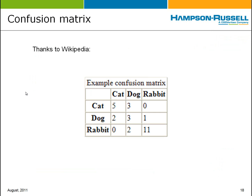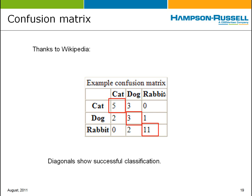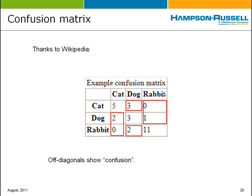One handy way of determining how well all this works is to create what's called a confusion matrix, commonly used for classification problems. As an example from Wikipedia: a computer with a neural network was trained to recognize a cat, a dog, and a rabbit from a picture. The matrix shows how well it did — the right answer is on the left-hand side and the estimated value by the computer is on the top. For example, when it was shown a cat, it got a cat five times, but three times it thought it was a dog — some confusion between cat and dog — and it never thought it was a rabbit. The diagonals show successful classification, but the off-diagonals show confusion. This network is very good at telling a rabbit from anything else, but not so good at distinguishing dogs from cats.